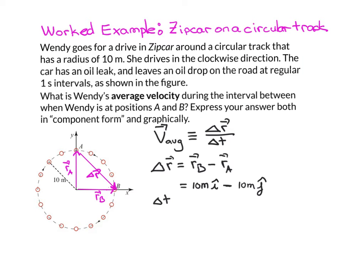So the average velocity of the zip car between when it is at point A and point B is, just plugging into the definition of average velocity, the numerator is delta R, which we just said is that, and I need to divide by four seconds. That's delta T.